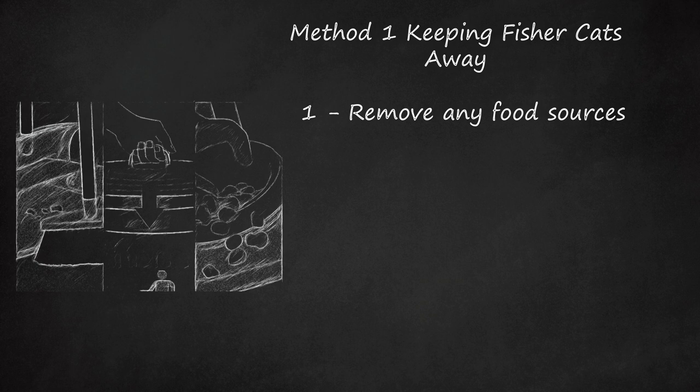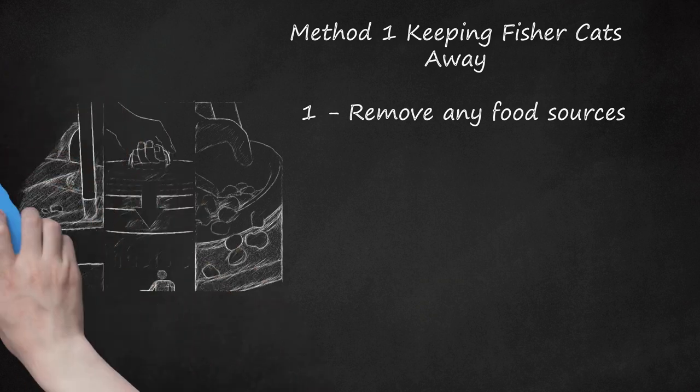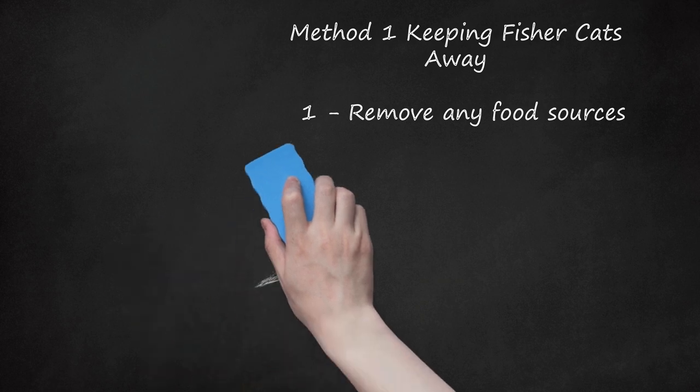This means you should get rid of rats and mice infestations before fisher cats come running to target them. Seal all garbage cans and don't put food out for animals. Don't leave out cat food, for example. Although they favor meat, fisher cats might still be attracted to wild bird feeders, seed beneath the feeders, or water sources in your yard.